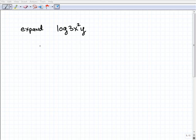Log 3x squared times y, and the word expand simply means just write this out another way, and expanding kind of implies it's going to be longer or bigger, and that's exactly the case here. So the first thing I'm going to do is I'm going to break up this product, and I have 3 times x squared times y.